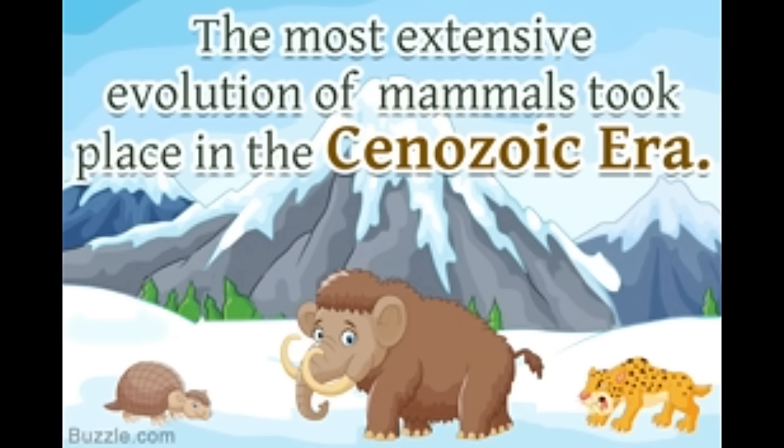A major chunk of the current time span on our planet, the Cenozoic era, began after the catastrophic Cretaceous-Paleogene mass extinction, eradicating most of the ruling dinosaur and other reptile species. This provided mammals a chance to evolve and dominate.